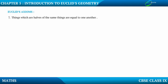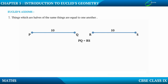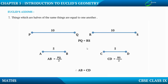Similarly, things which are half of the same things are equal to one another. In the last example we doubled; now we will halve. Say PQ equals 10 and RS equals 10, so PQ is equal to RS. Let AB be half of PQ, that is AB equals PQ divided by 2, and CD equals RS divided by 2. Since PQ and RS were equal, we get AB is equal to CD — their halves are also equal.